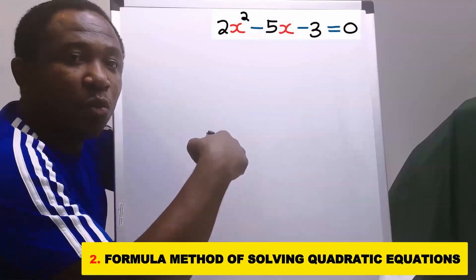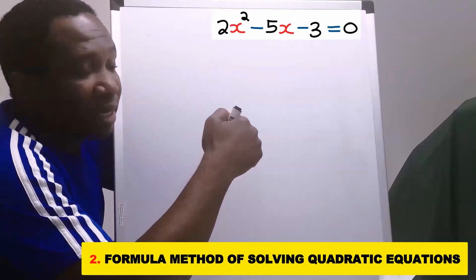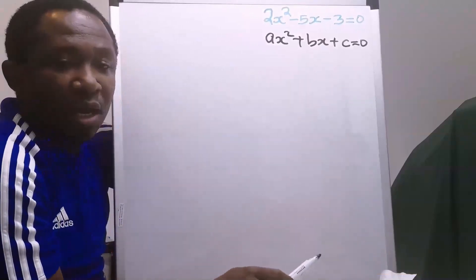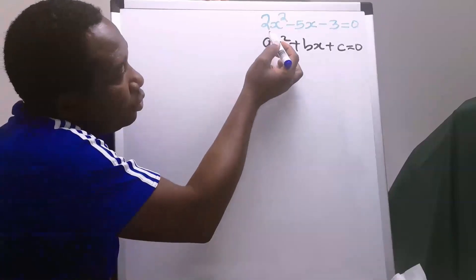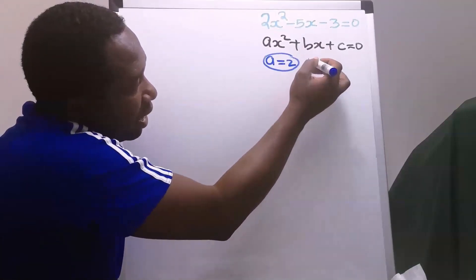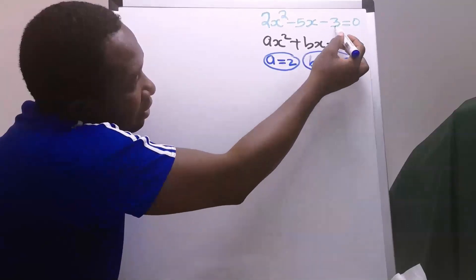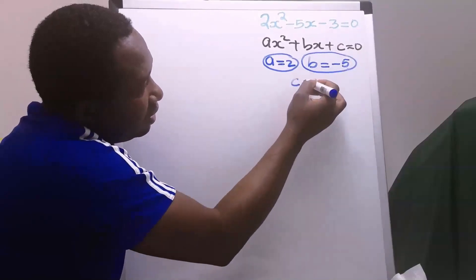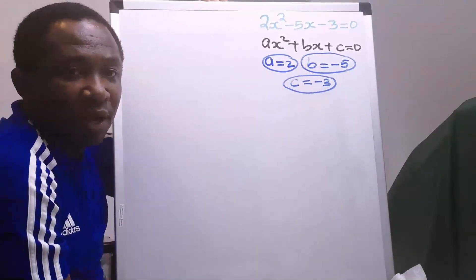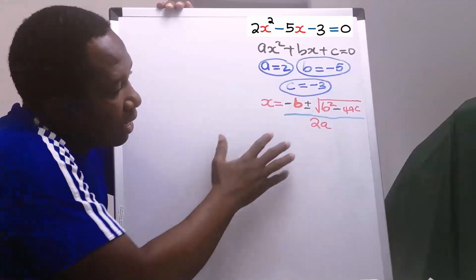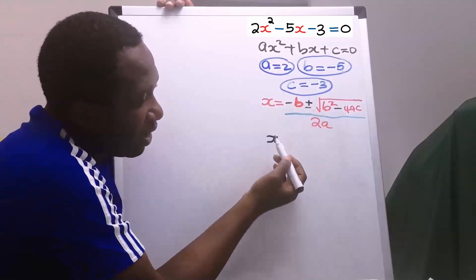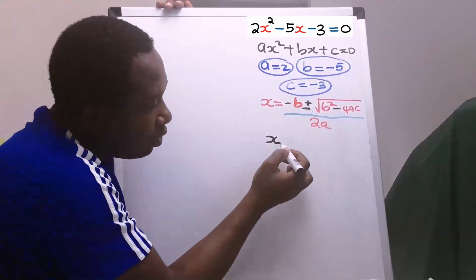To solve using the quadratic formula, we first consider the general form ax squared plus bx plus c equals 0. Comparing with our equation: 2 is in the position of a, so a = 2; minus 5 is in the position of b, so b = minus 5; and minus 3 is in the position of c, so c = minus 3. We now apply the quadratic formula. To find x1 we use the plus, and to find x2 we use the minus.